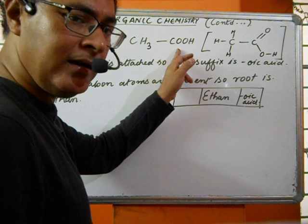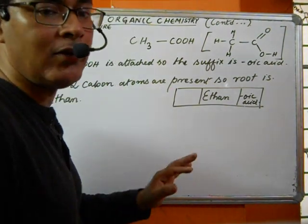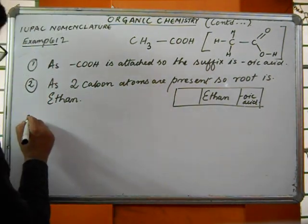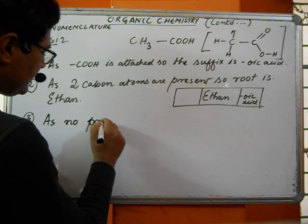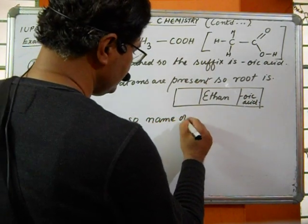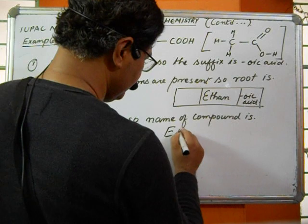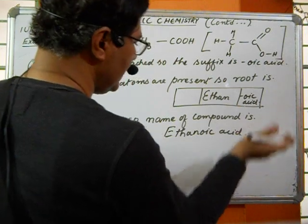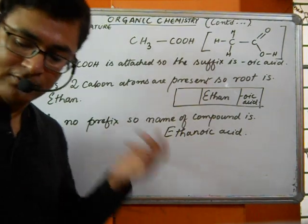For -al as well as -COOH, the position number 1 may or may not be given — preferably it is not given. As there is no prefix, the name of the compound is ethanoic acid.